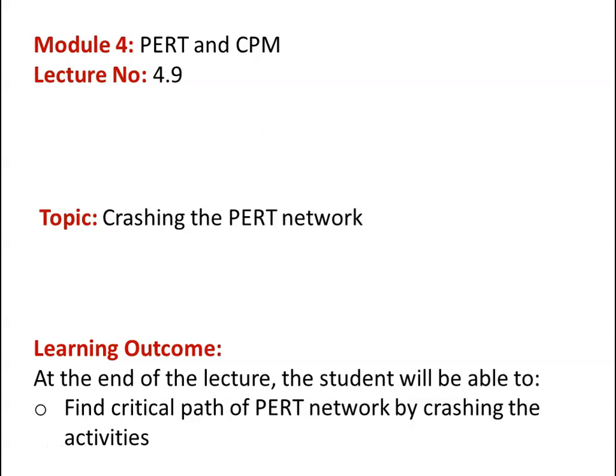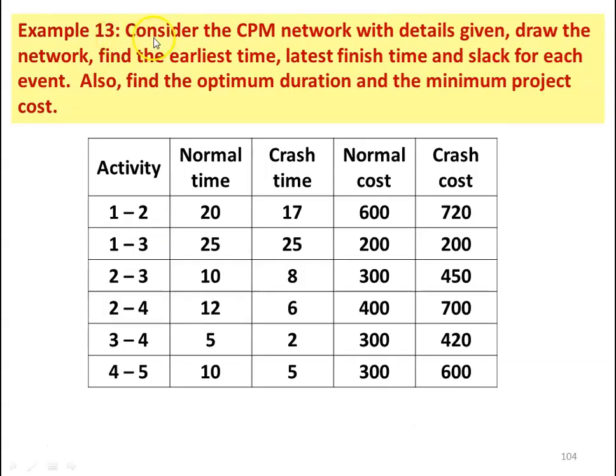In the earlier lecture, we discussed a problem on crashing the PERT network. We will continue with another example in the crashing of the PERT network. The learning outcome: at the end of the lecture, the student will be able to find the critical path of a PERT network by crashing the activity. Also, find the optimum duration and the minimum project cost.